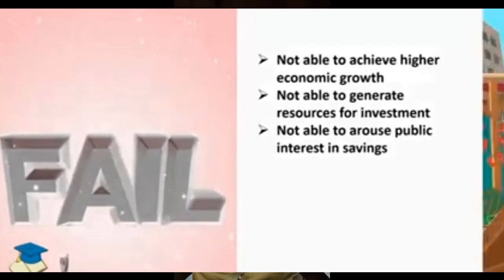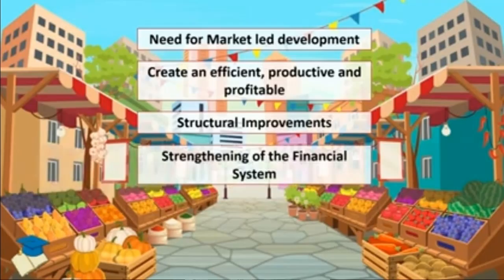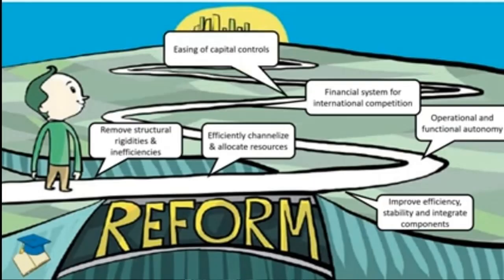In the period between 1947 and 1990, India was not able to achieve much economic growth. India was not able to generate high resources for investment and also not able to arouse public interest in savings. At this point India resorted to market-led development, trying to create efficient, productive, and profitable structural improvements to strengthen the financial system. India removed structural rigidities and inefficiencies, the government tried to efficiently channelize and allocate resources, and the financial system was strengthened enough to be ready for international competition. Many capital controls were also eased out, leading to improved efficiency and stability.